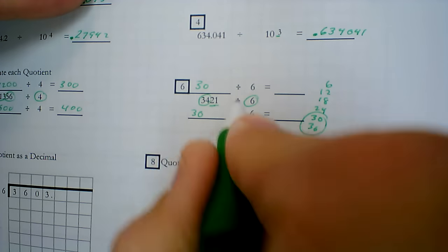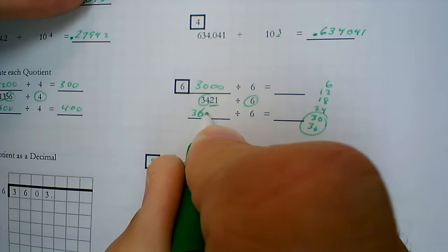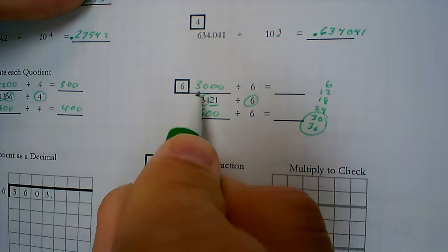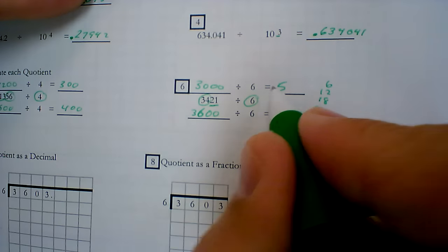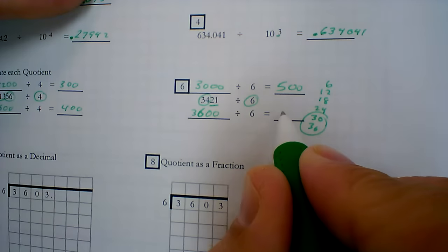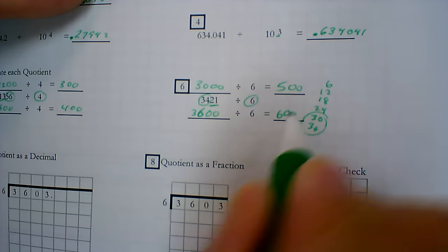I'm going to add two zeros. 1, 2. 1, 2. 30 divided by 6 is 5. Then I add those two zeros. 36 divided by 6 is 6. Then I'm going to add those two zeros.